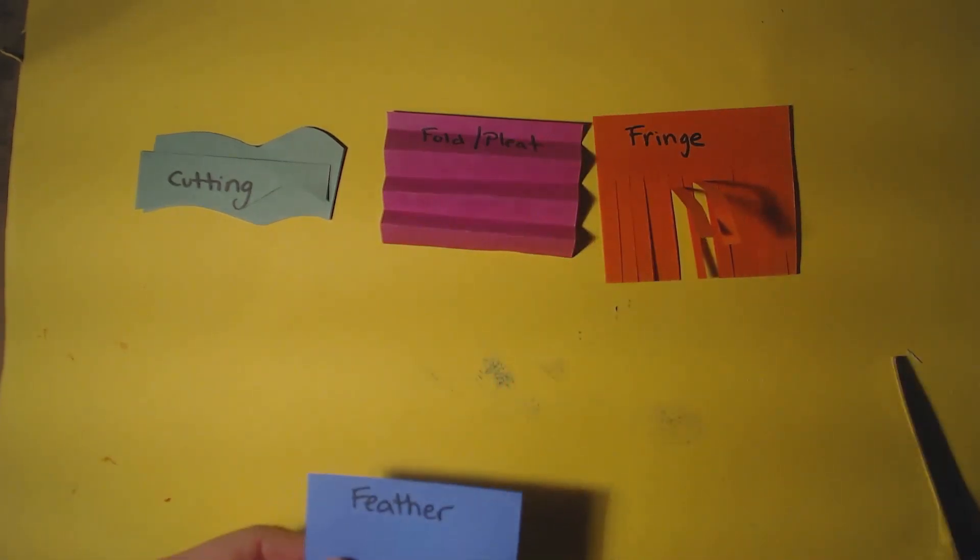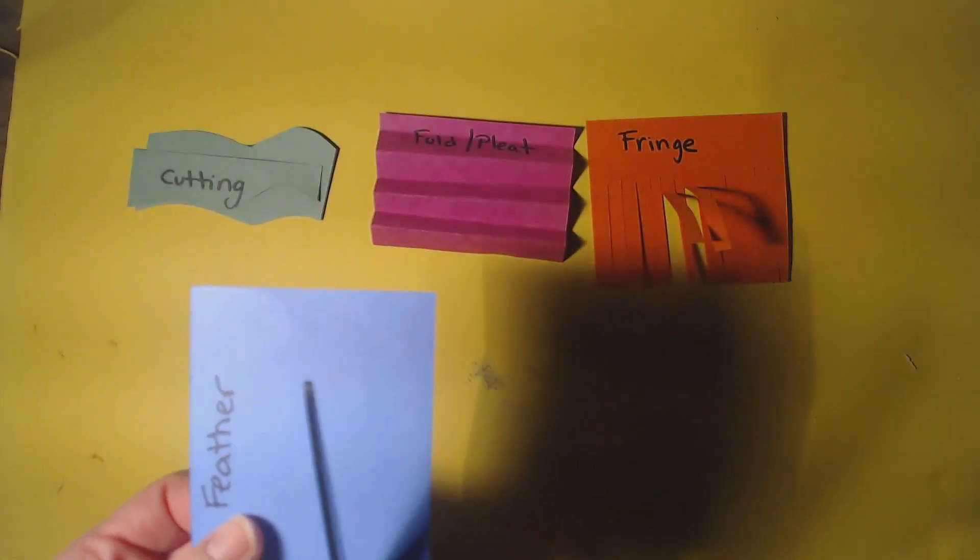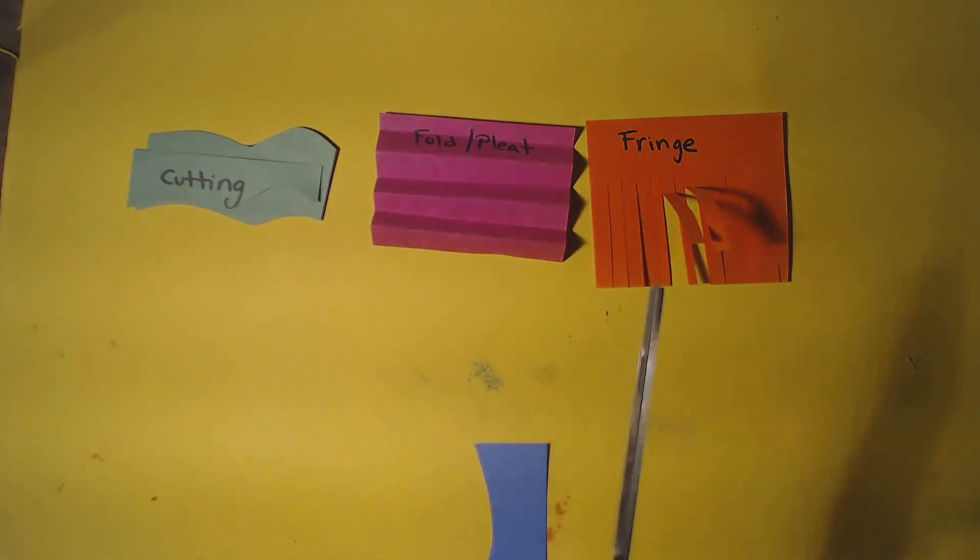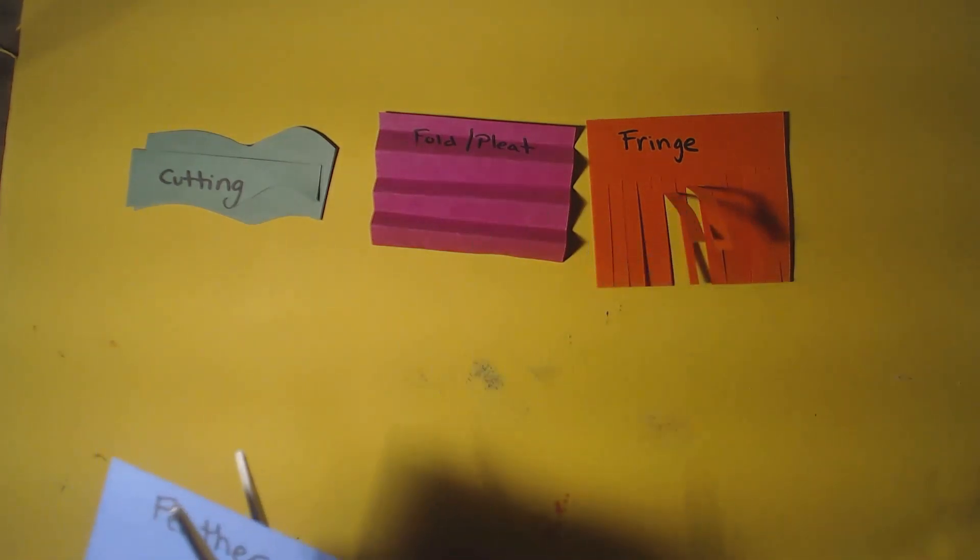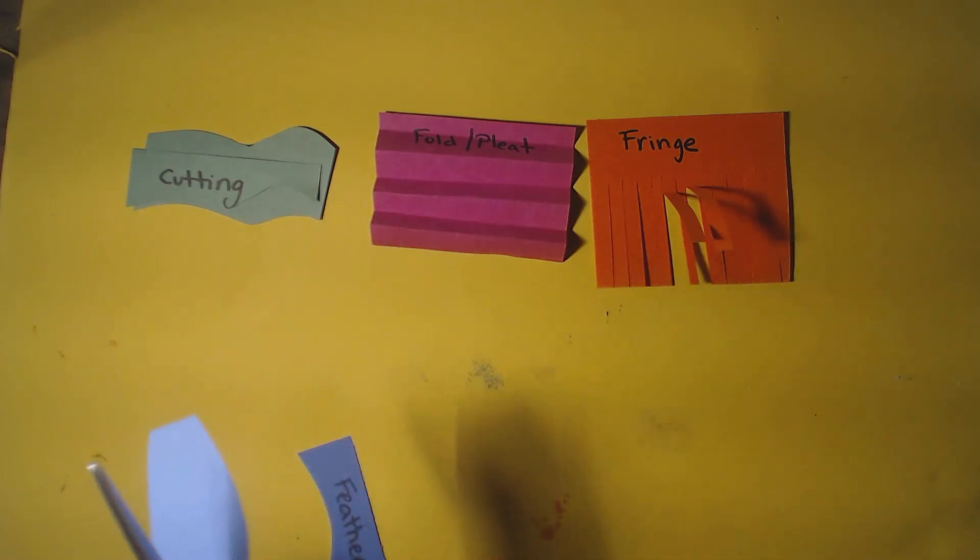The next one is feather. And feather is kind of like fringe. So I'm going to turn this into a feather shape, more of a feather shape, like this. And this time I'm going to cut from both sides. But I'm not cutting all the way through to the middle. Because if you do that it's going to fall apart.